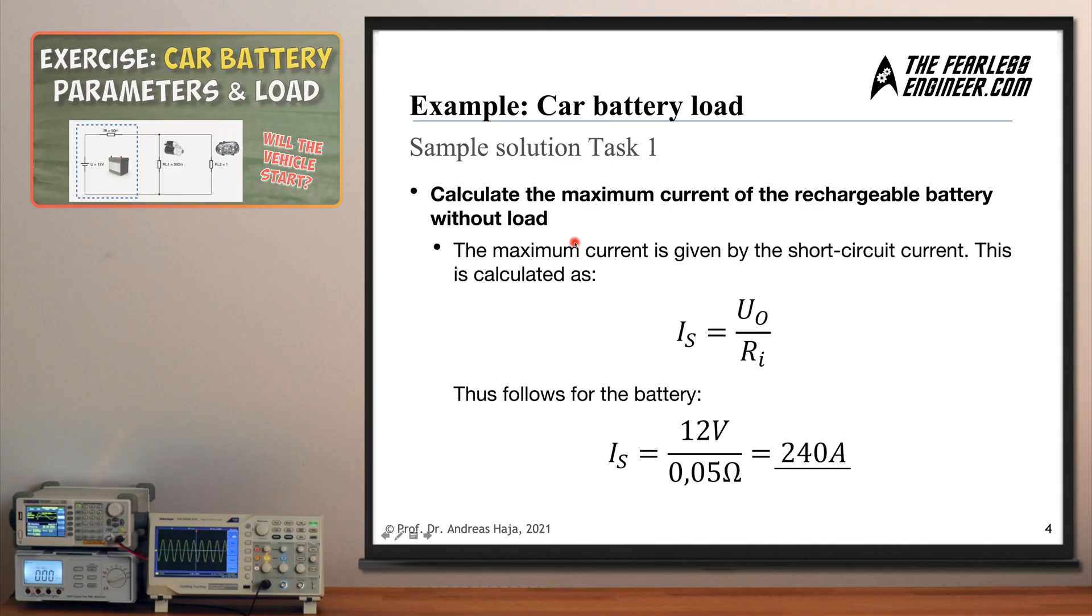Let's take a look at my sample solution for task number one. The task was to calculate the maximum current of the rechargeable battery without a connected load and the maximum current is given to us by the short circuit current. And the short circuit current, even though it should not be measured especially not with a car battery, it can be calculated from two parameters. The first is the open circuit voltage and the second one is the internal resistance. So this gives you the short circuit current and the short circuit current for this particular battery is 12 volts divided by 0.05 ohms which is 240 amps.